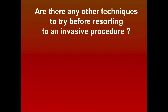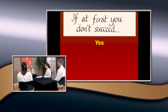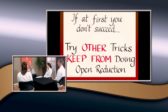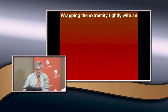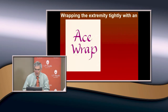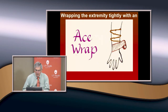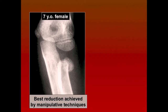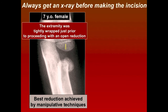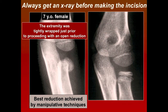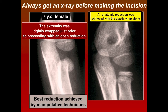Before an invasive procedure, try other non-invasive tricks. I learned by experience: when preparing to operate on a patient, I wrapped the arm tightly with an ACE wrap to exsanguinate it, and the compression actually achieved an anatomic reduction. Always take an X-ray before making your incision after applying the wrap. There is an article in the literature about this technique — an anatomic reduction was achieved with the elastic rubber compression.